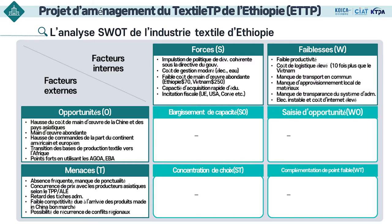Concernant les faiblesses, la qualité et la productivité sont faibles en raison de la faible capacité technique. Il y a encore beaucoup de produits défectueux et la productivité est pour l'instant faible car les conditions de travail des ouvriers et la formation de base sur le travail sont médiocres. Lorsque nous interviewons les PDG des entreprises qui investissent actuellement, même si la main-d'œuvre est bon marché, comme la productivité et la qualité sont encore faibles, il n'y a toujours pas de profit significatif. Cependant, il affirmait qu'il y a une forte possibilité de devenir une bonne base de production textile.